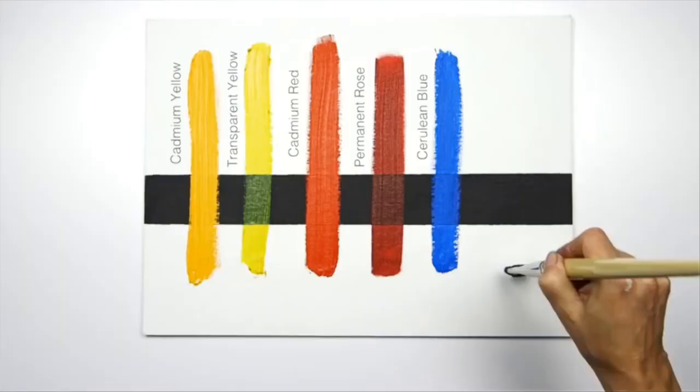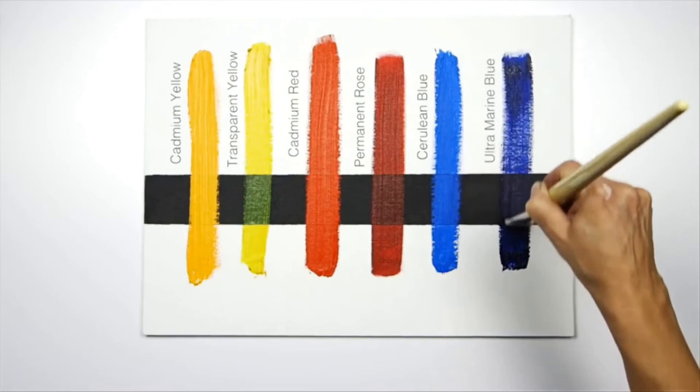Whereas, the ultramarine blue, allows the light and the dark to show through, making it an excellent color for glazing.